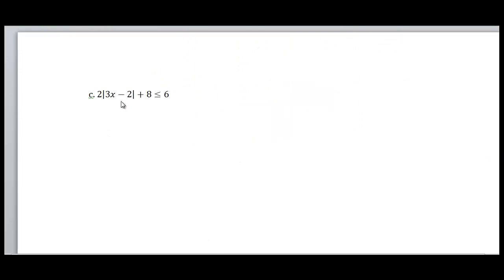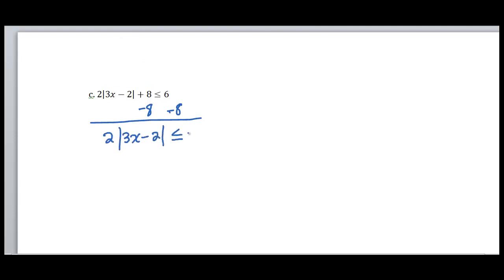Let's look at a couple more examples because sometimes some interesting things happen. In this example, we have 2 times the absolute value of 3x minus 2, plus 8, is less than or equal to 6. Again, we're going to want to isolate our absolute value. To isolate, I subtract 8 from both sides. I get 2 times the absolute value of 3x minus 2 is less than or equal to negative 2. Do not try to distribute — this is not a distributive property. We isolate by dividing by 2. I get absolute value of 3x minus 2 is less than or equal to negative 1.